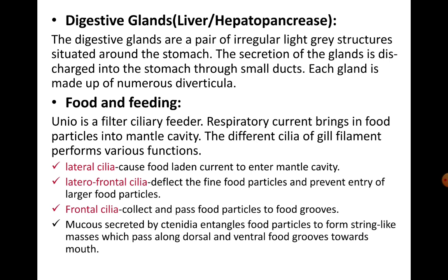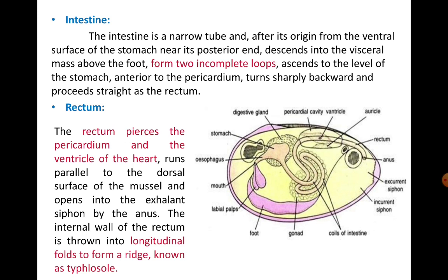The excurrent siphon acts as a cloaca because through it, the undigested food material released through the anus is thrown out, and also the gametes formed in Unio are released through the same opening. An opening common for both excretory waste and reproductive gametes is called a cloaca, so the excurrent siphon of Unio can be referred to as its cloaca.